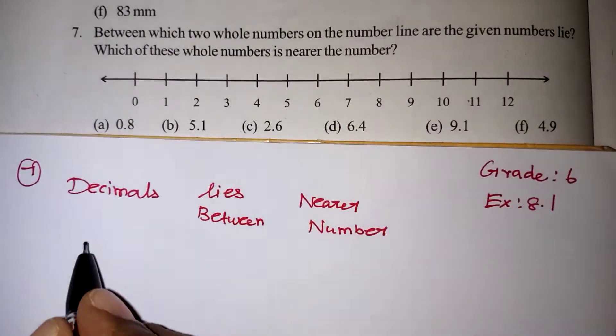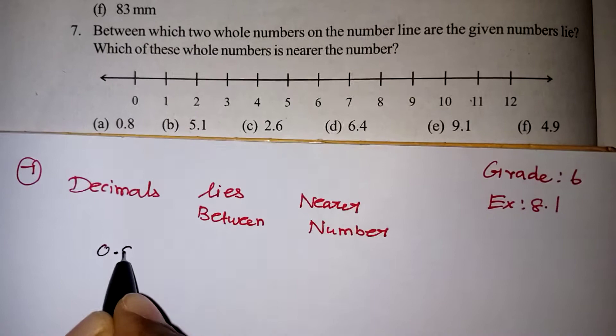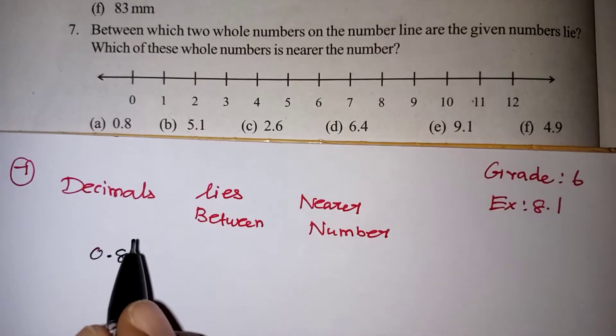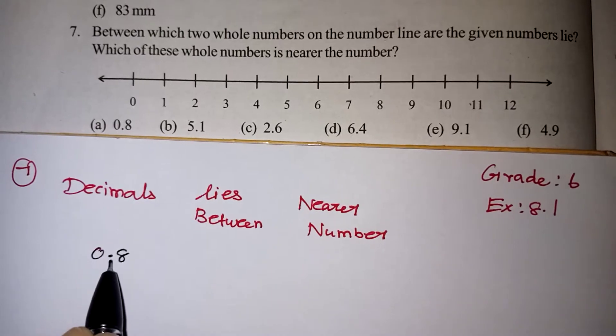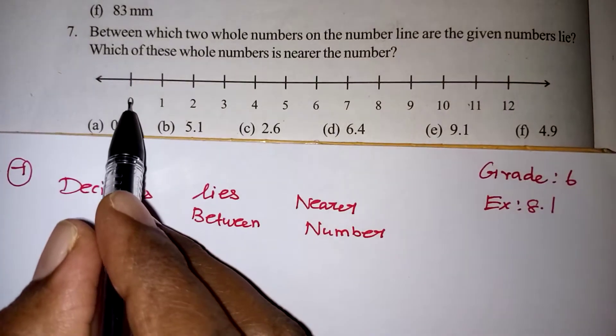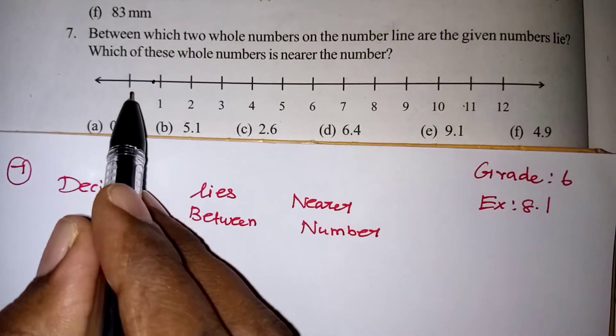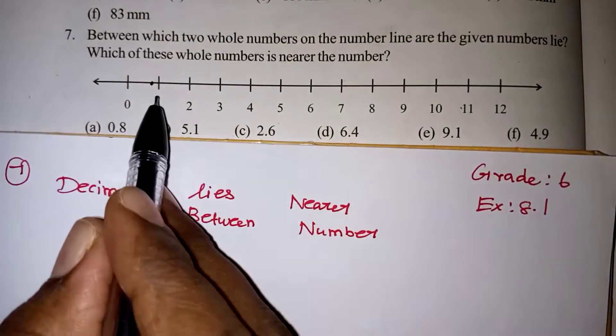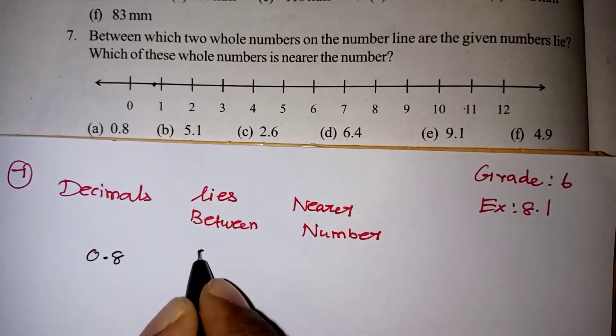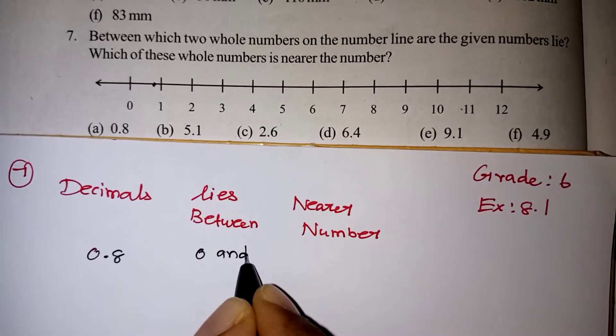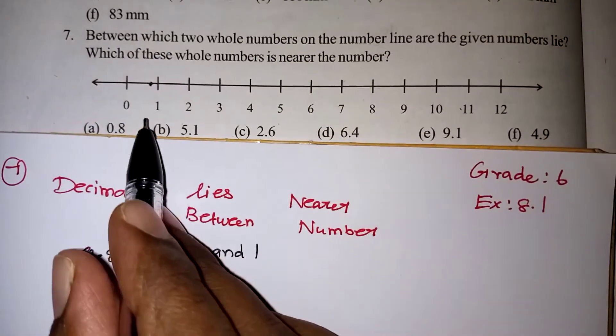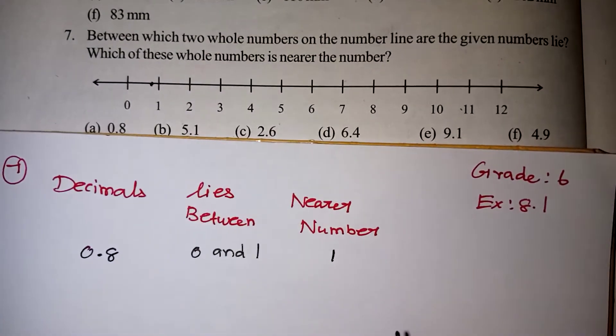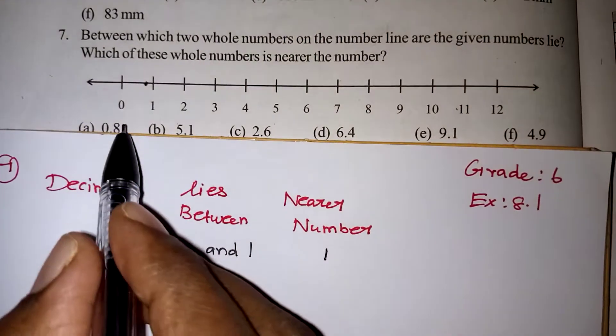First question is 0.8. The given decimal is 0.8. We have to find between which two numbers it comes. 0.8 will come after 0, before 1. If you draw 10 lines, the 8th line will be 0.8. So it lies between 0 and 1. To find the nearer number, it is nearest to 1 only.